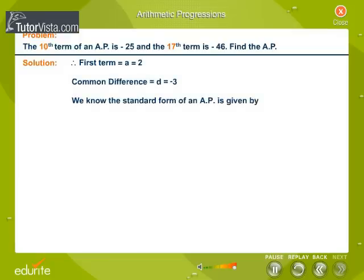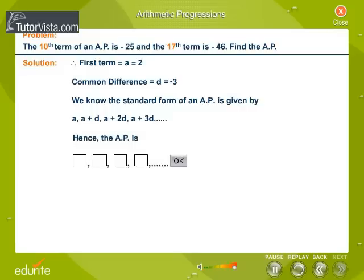The standard form of AP is given by a, a plus d, a plus 2d, a plus 3d and so on. Substitute the values of a and d to obtain the AP.